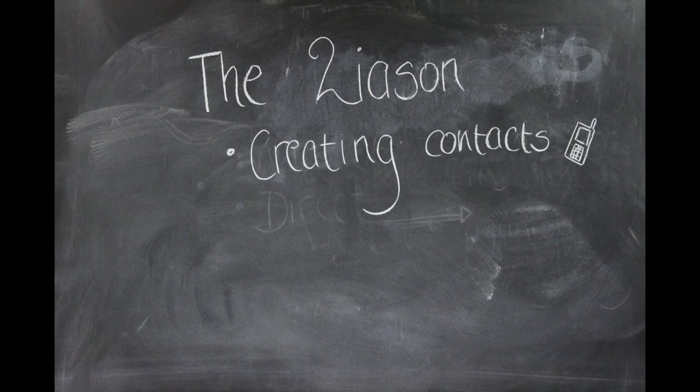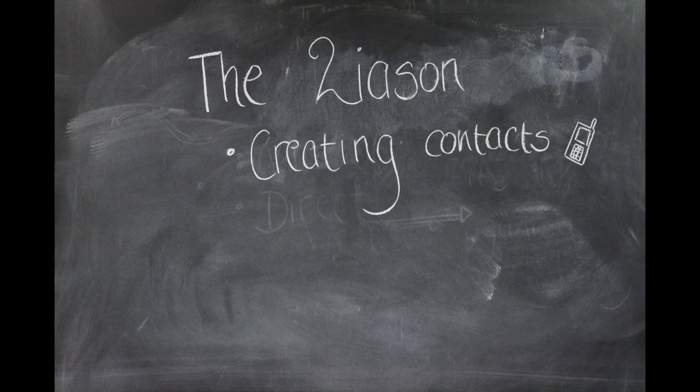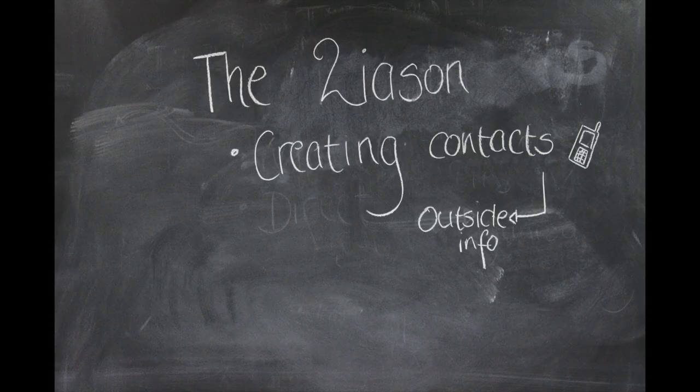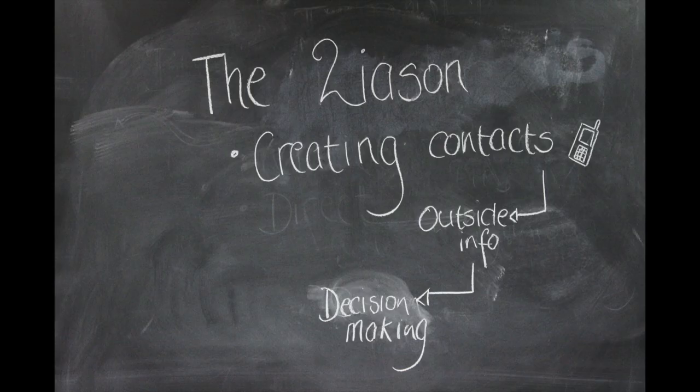The liaison role consists of creating contacts outside the vertical chain of command. A manager must form links with a wide variety of people and groups, such as clients, managers of outside organisations, subordinates, and government officials, as opposed to solely with their superiors. This role is vital to gain access to outside information required for decision making and to spread to employees.